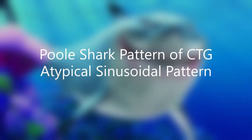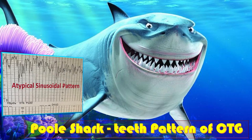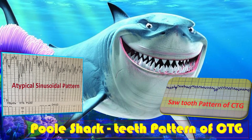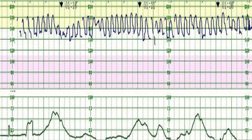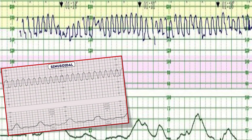Today we will discuss the pool shark teeth pattern of CTG, which is also termed as atypical sinusoidal pattern or sawtooth pattern of CTG. The pool shark pattern of CTG is a pattern resembling the sinusoidal pattern but with a more jagged sawtooth appearance rather than a smooth sine wave form.